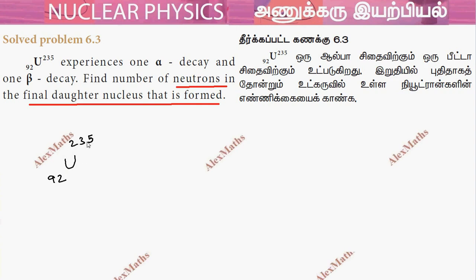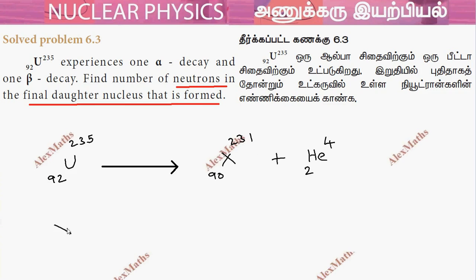This is alpha decay first, so alpha decay emits an alpha particle, which is 2,4. The daughter nucleus X has atomic number 90, because 92 minus 2 is 90, and atomic mass 231, because 235 minus 4 is 231.